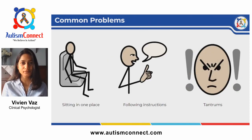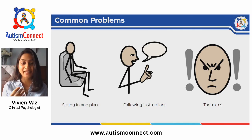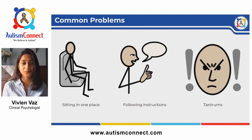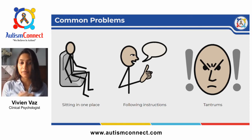I would like to share some of the common difficulties parents face while trying to work with their children at home. Some say their child does not sit in place or does not pay attention when they're talking. Other parents complain that their child does not follow instructions, and some even say their child throws tantrums. Why does this happen? It could be that your child may not be able to understand your expectations and instructions, may not be motivated to do the activity, or the activity itself might be too difficult for them.